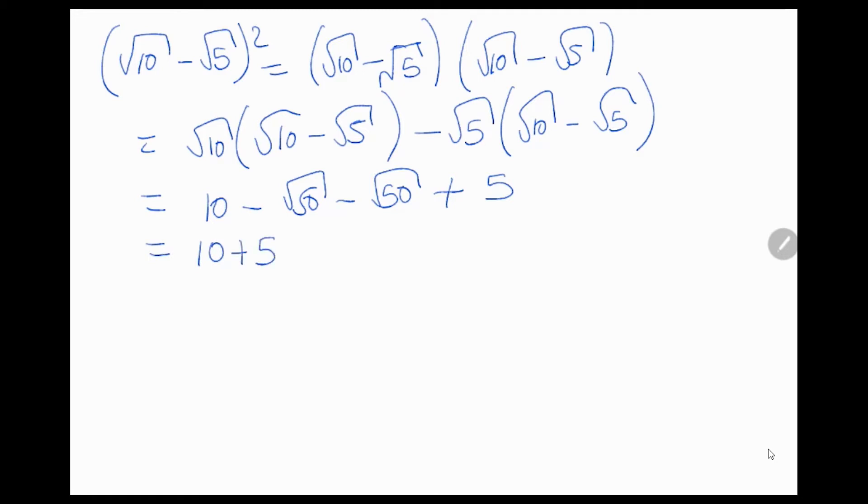which is 10 plus 5 minus 2 times the square root of 50, which we will further expand as 2 times 5 times 5.